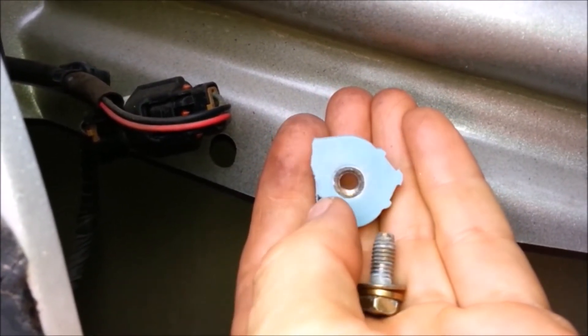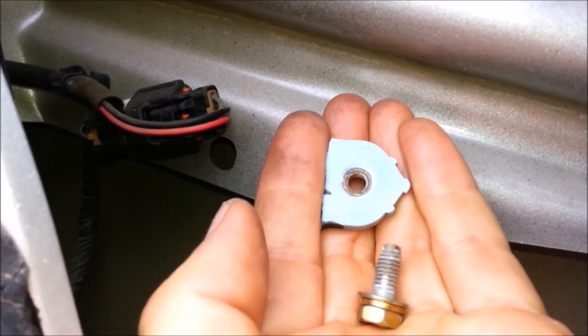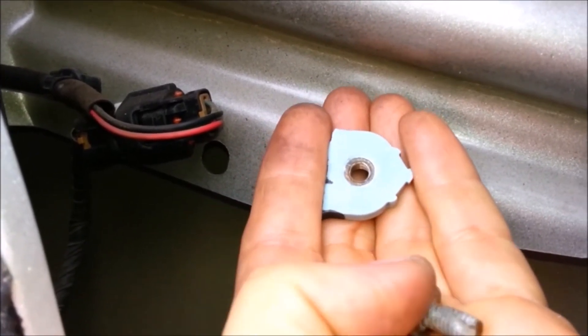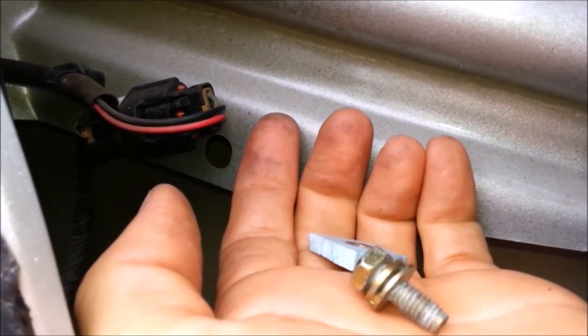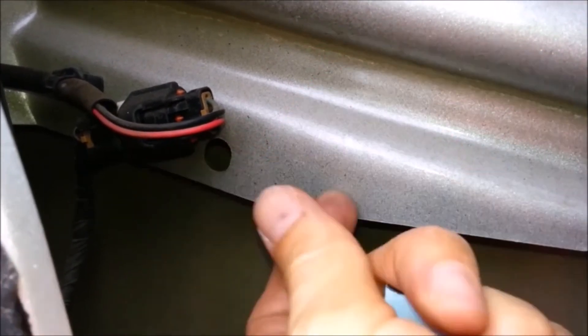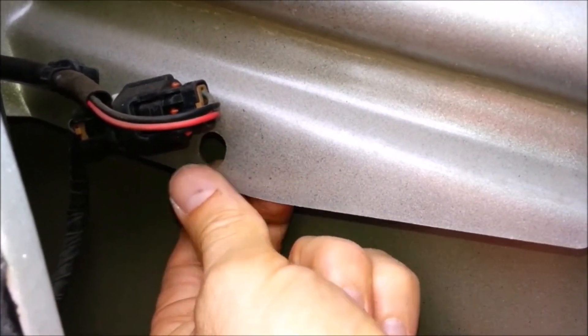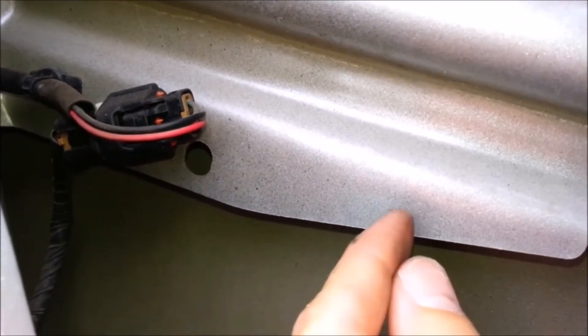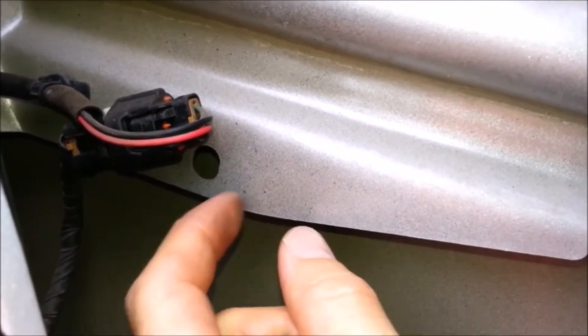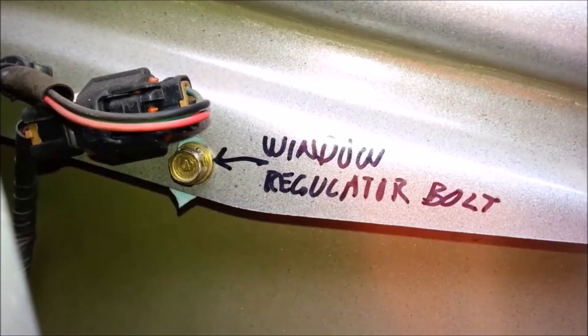So I'm going to use the old sash nut to fasten this bolt through this empty hole I found. Then I'll write a note on the metal in case I forget or someone else is working on it. That should do it.